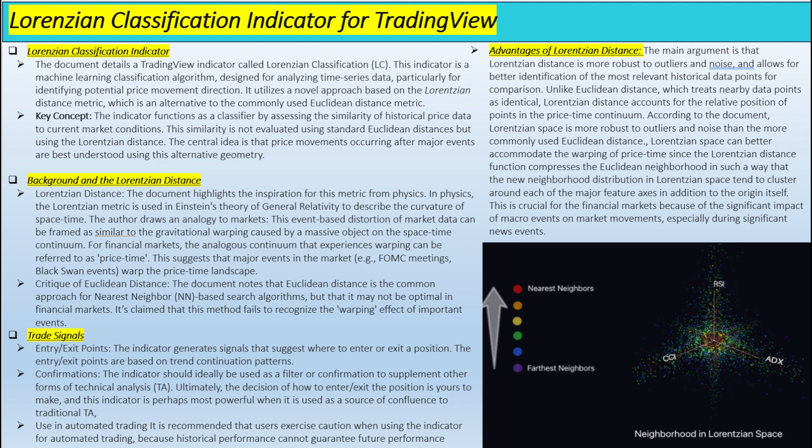Like most indicators, this script gives you buy and sell signals, but these signals are based on that Lorentzian classification. Each signal is the algorithm's best guess about whether the price is going to go up or down based on what happened in the past. The script allows you to customize the analysis — you can adjust how many neighbors it considers, what features it focuses on, even how it detects trends. The script also has a backtesting feature that lets you see how it would have performed in the past. You can run simulations, see how different settings play out, and get a feel for its strengths and weaknesses. Of course, past performance isn't a perfect predictor of future success.